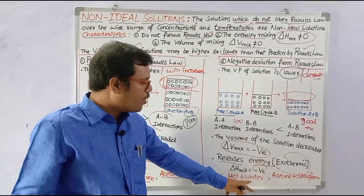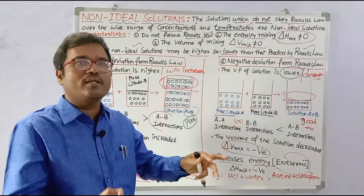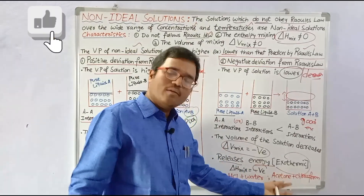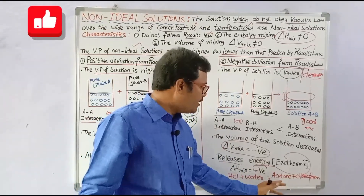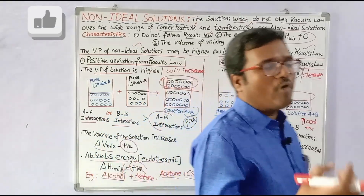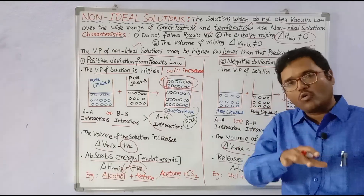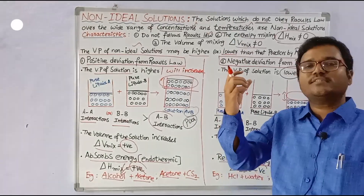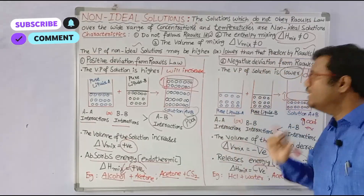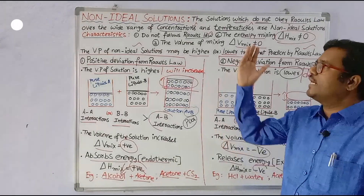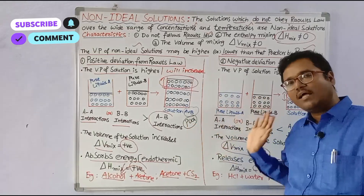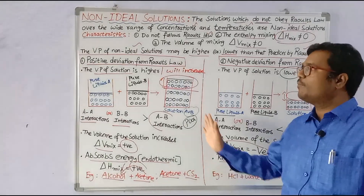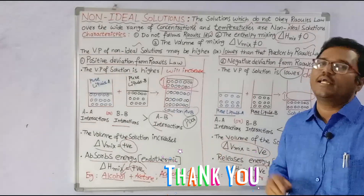Examples of negative deviation: when hydrochloric acid is added to water, volume decreases and heat is released. When acetone is added to chloroform, an intermolecular hydrogen bonding is formed between acetone and chloroform, so the volume decreases and it is not easy for either chloroform or acetone to evaporate, meaning fewer vapors are produced and the vapor pressure decreases. That is about non-ideal solutions and their characteristics, positive deviation and negative deviation from Raoult's law. In the next video, I will do separate videos on positive deviation as well as negative deviation. Thank you for watching.